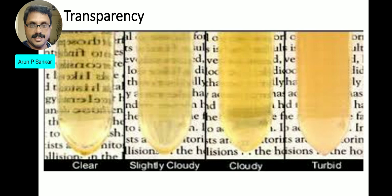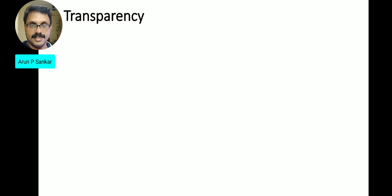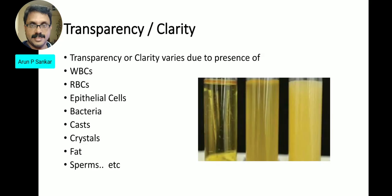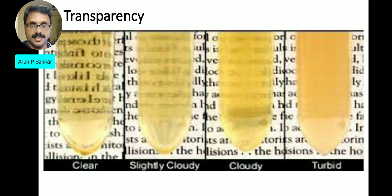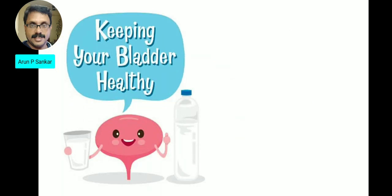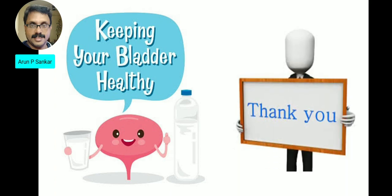Turbidity in urine may be due to WBCs, RBCs, epithelial cells, bacteria, and casts — all related to disease conditions. That concludes the physical examination report on transparency. In the next video, we will cover specific gravity and reaction. Thank you.